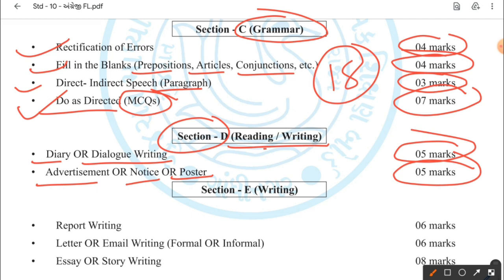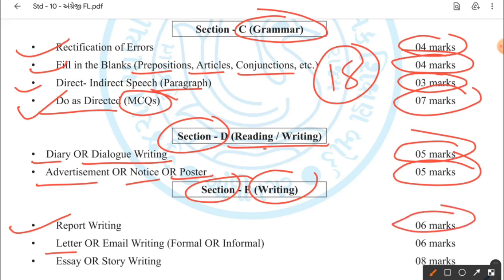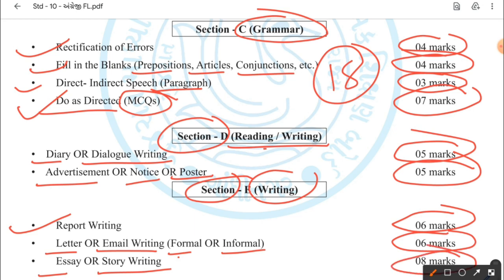The last section — Section E — is entirely writing. The first question is report writing: no choice, it's compulsory, weightage 6 marks. Then letter and email writing — in email you can get formal or informal — weightage also 6 marks. And the last is essay and story writing, which is 8 marks. I hope students you understood Sections C, D, and E.